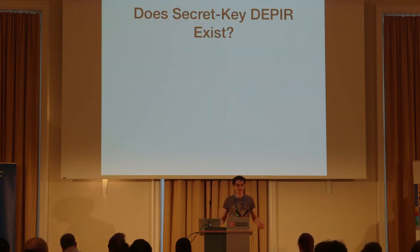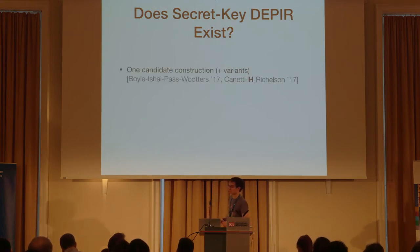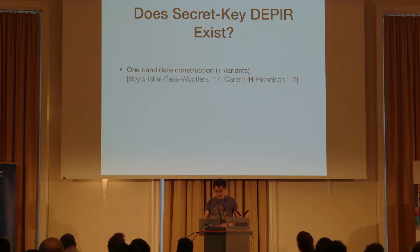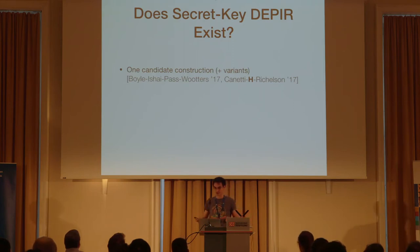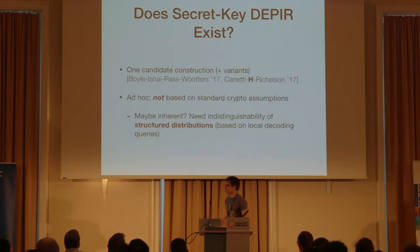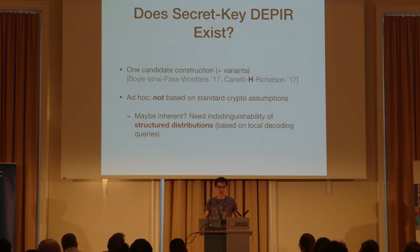The next question is: does secret key doubly efficient PIR exist? I also don't really know, but I have some more reason to think it might. There's basically one candidate construction from the same TCC 2017 papers, with some fuzzy aspects where you can play with parameters. But this is fundamentally an ad hoc construction — it's not based on any standard cryptographic assumption — and it seems very hard to construct such a scheme from a standard assumption, though I don't have any formal evidence.